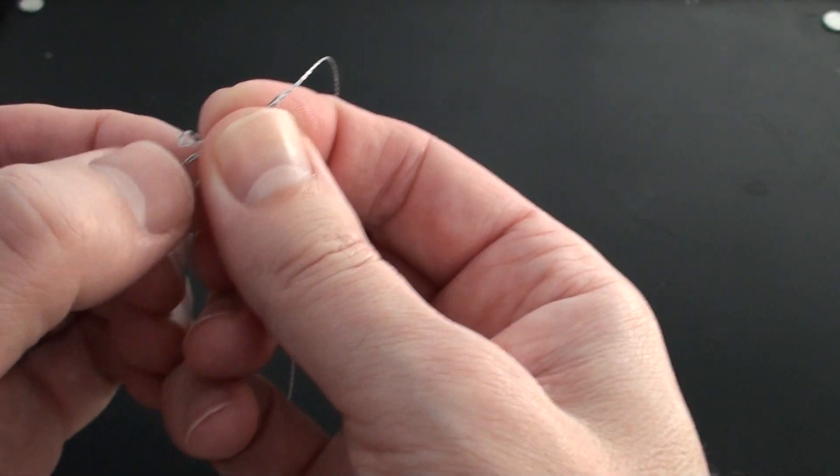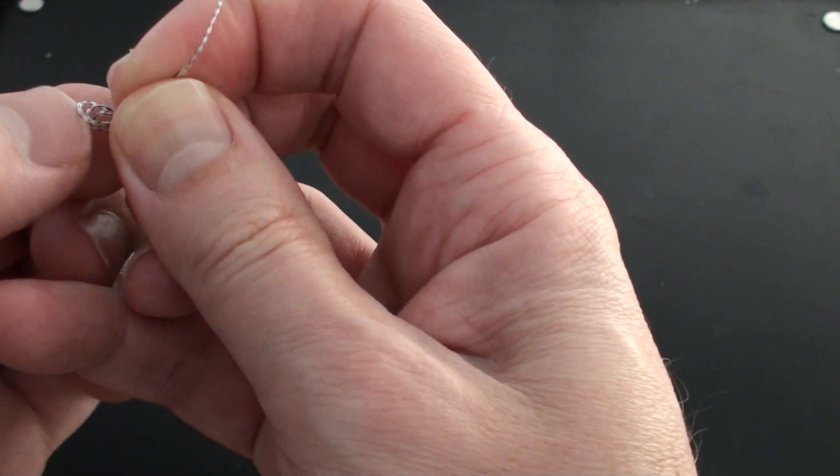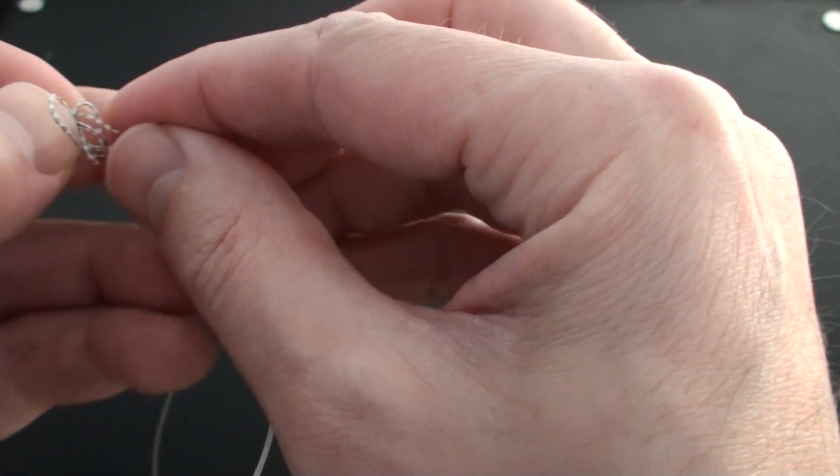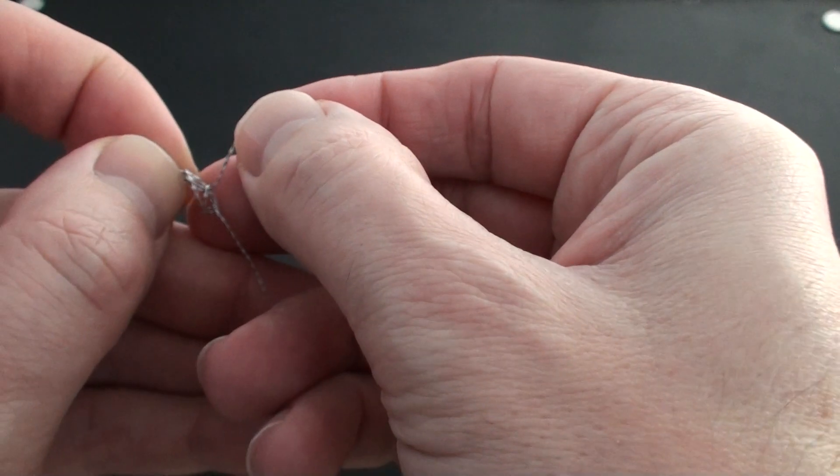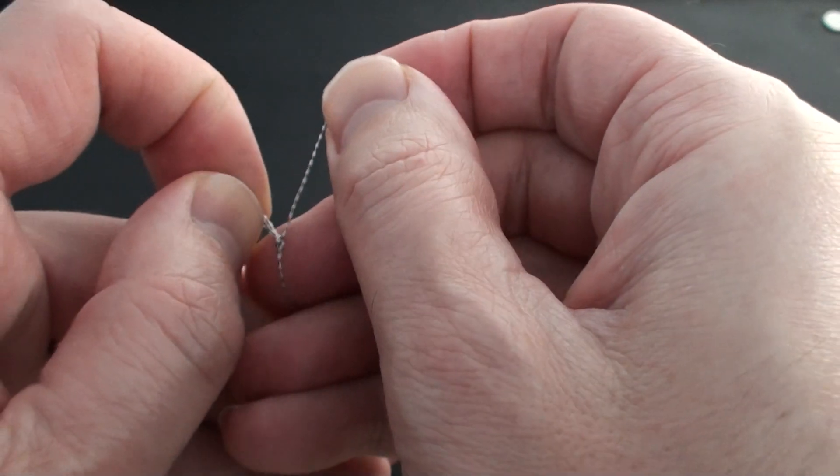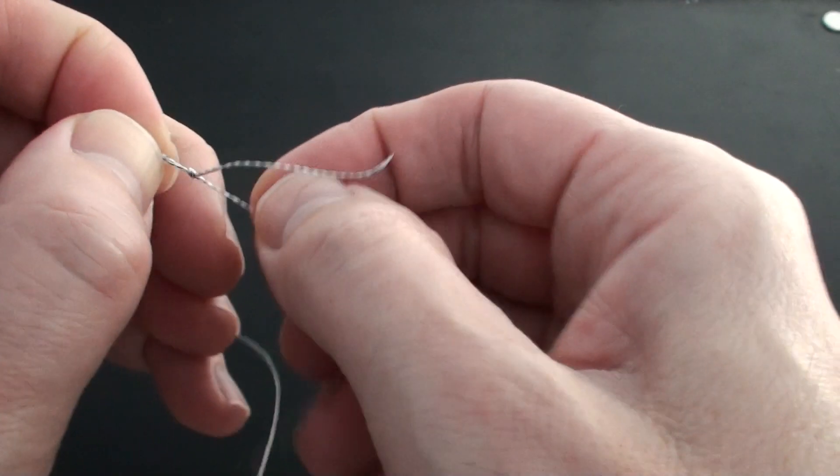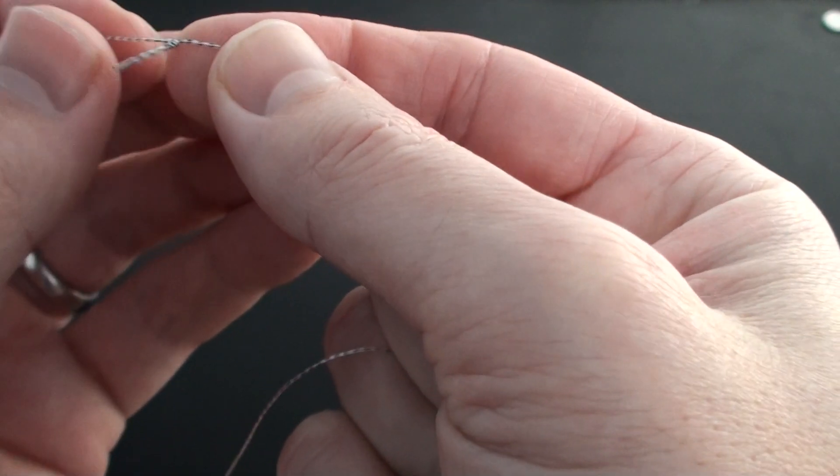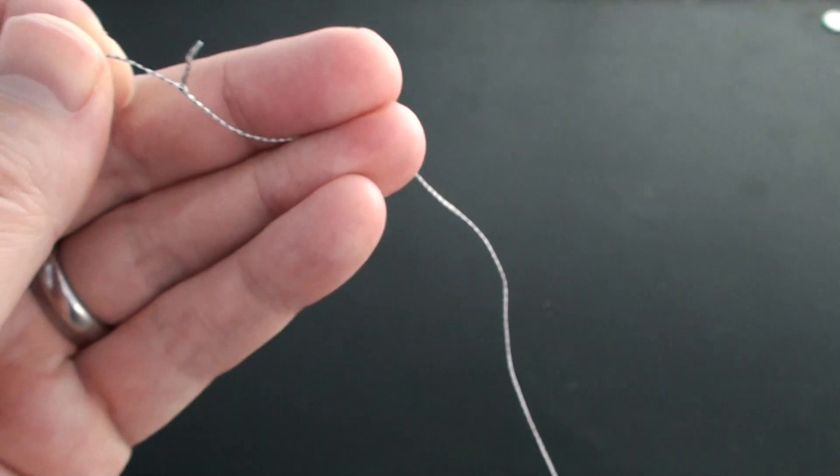Pass the single loop through the double loop. Pull the end nice and tight. There we have it. Our loop has cut off the excess.